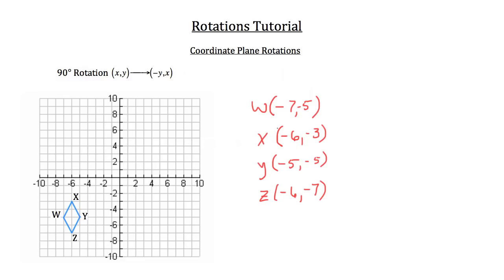So if we were going to rotate each of these points 90 degrees, we're going to switch the location of the x and y, and we're going to flip the y to the sign opposite of whatever it currently has. So in this case, negative 7, negative 5 — we flip-flop these two points so that we have negative 5, negative 7. And then whatever the y was, we change the sign to the opposite. So if it was negative 5, it now becomes positive 5.